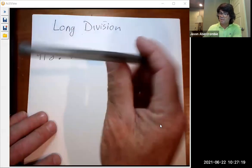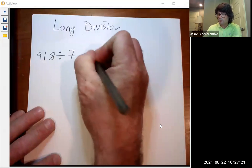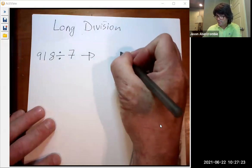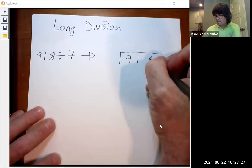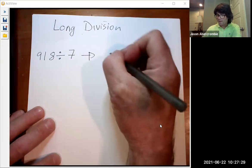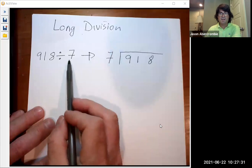The first step is to write this as a long division style problem. So you're going to have a bracket just like this. You're going to have the number that's being divided right there and the number we're dividing by, which is 7, right there.